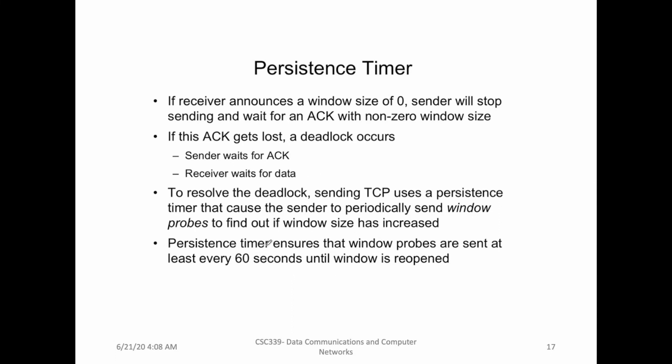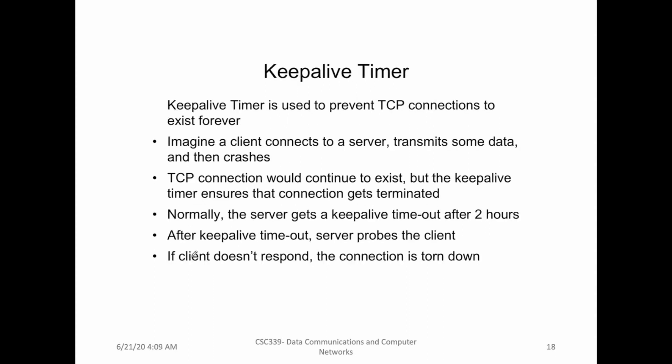The next timer that is used by TCP is known as keep-alive timer. The keep-alive timer is used to prevent TCP connections to exist forever. So there may be a case where a client connects to a server, transfers some data and then crashes, but on the server side the connection is still there. So normally server gets a keep-alive timeout after two hours. After keep-alive timeout, server probes the client and if client has crashed, there's no response from the client, the connection is terminated.